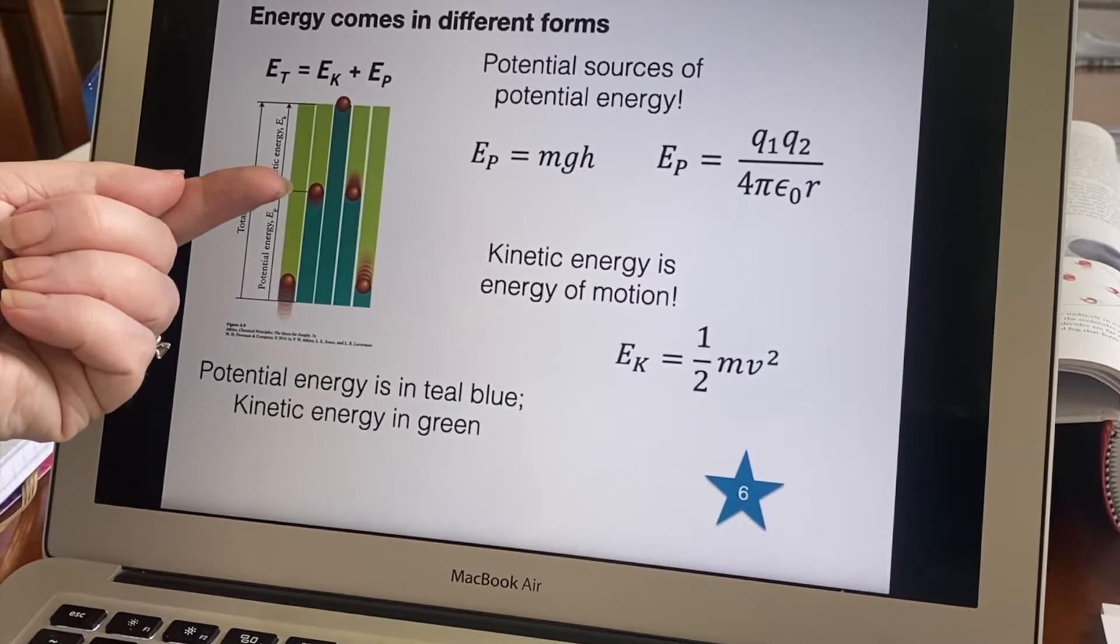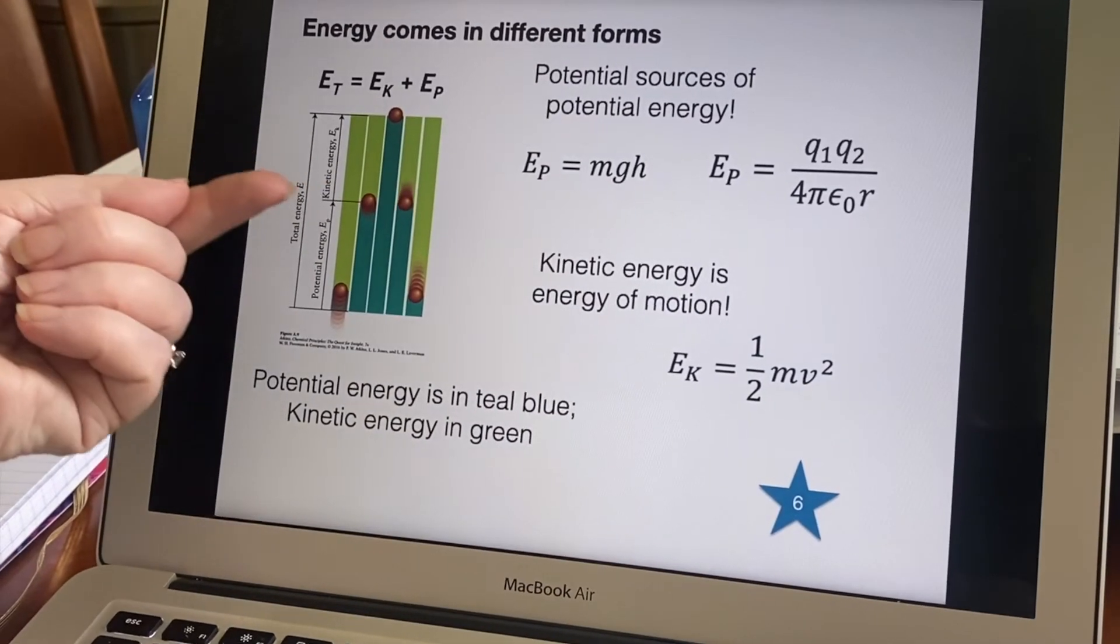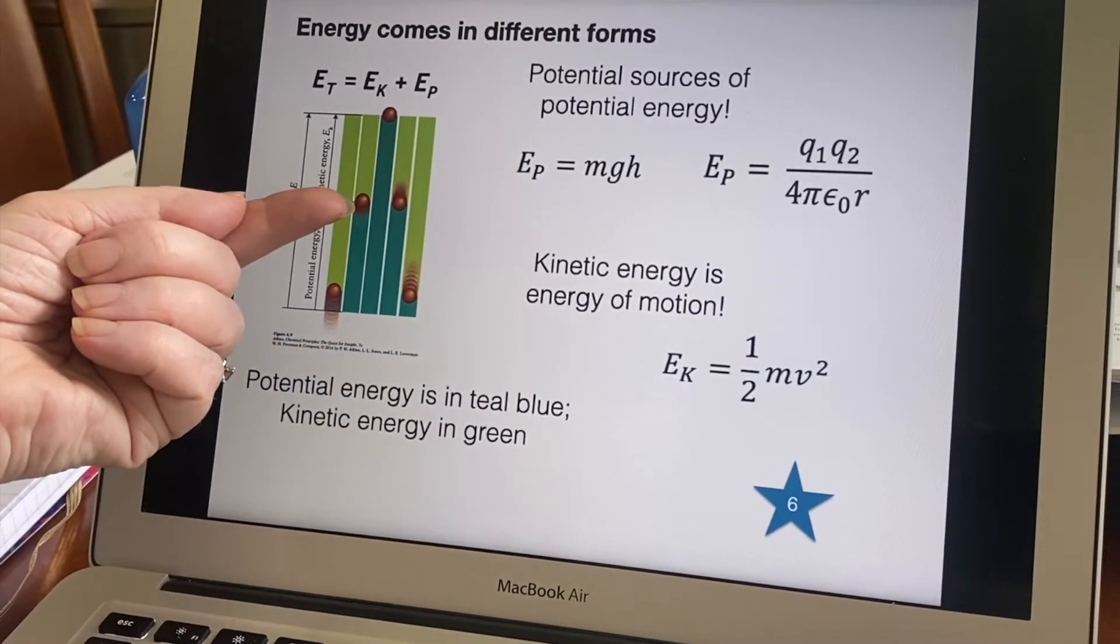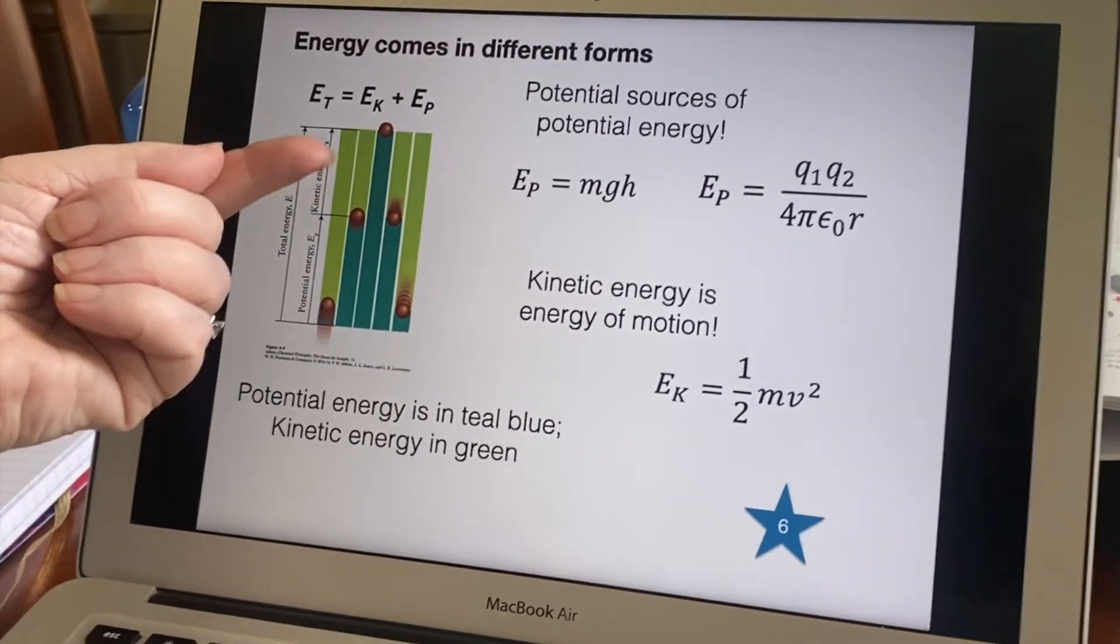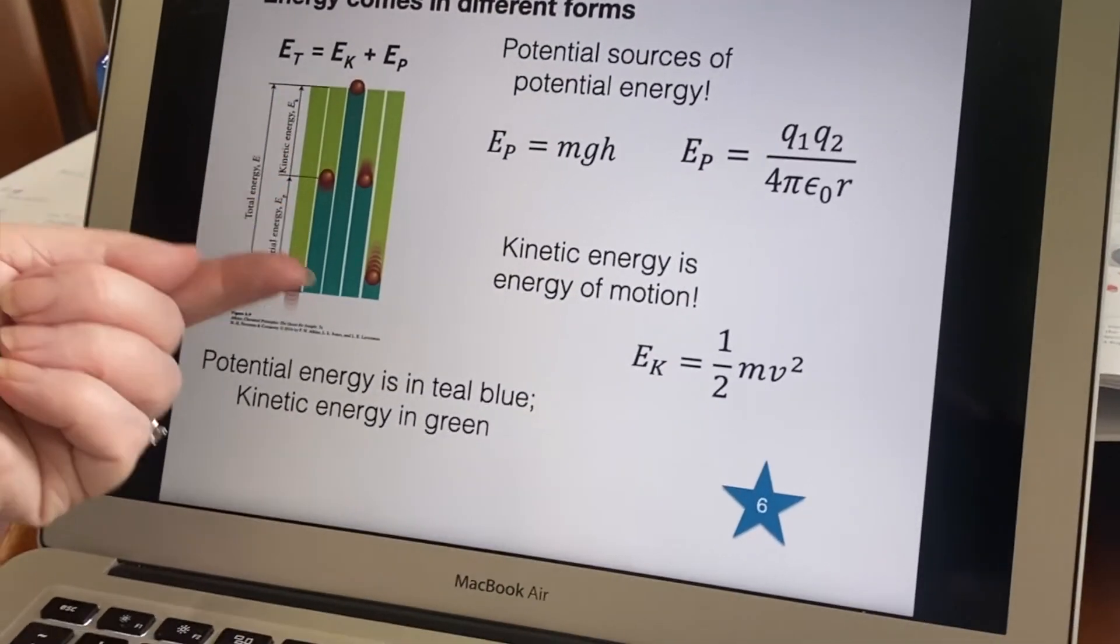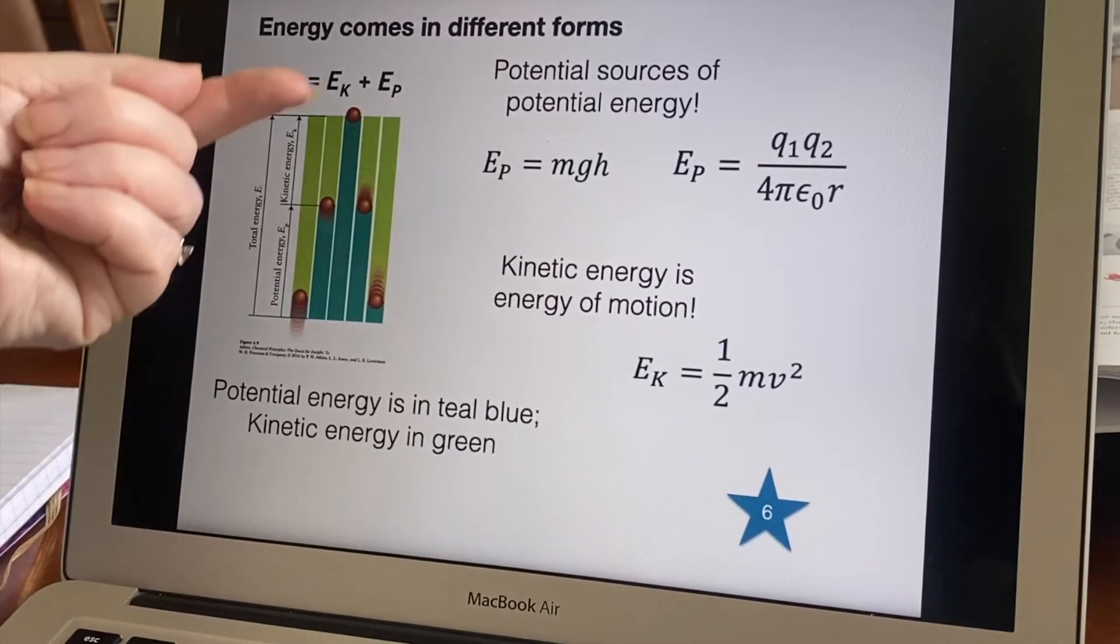As it is going higher it's slowing down, so it still has some kinetic energy but not as much because it's not going as fast. However it's higher off the ground so it has more potential energy.